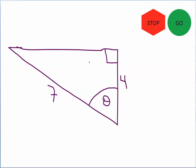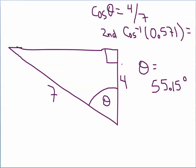We're solving for theta. We're trying to find the angle theta, so this will be an inverse function. Press on the stop sign. All right, let's see how you did. We're dealing with the adjacent side — the leg next to the angle — and the hypotenuse, so we're dealing with cosine. The cosine of theta equals the adjacent divided by the hypotenuse. Using the inverse cosine of 4/7, which is 0.571 correct to three decimal places, theta is 55.15 degrees.